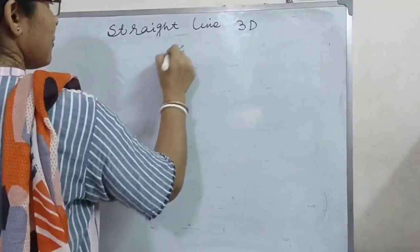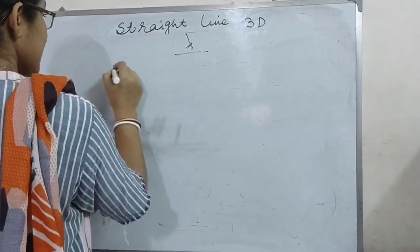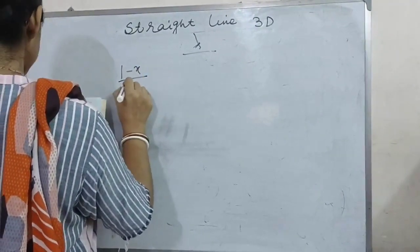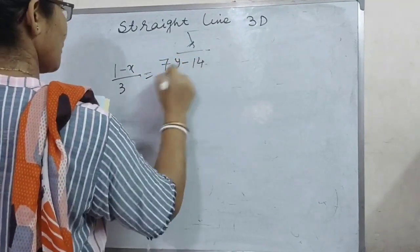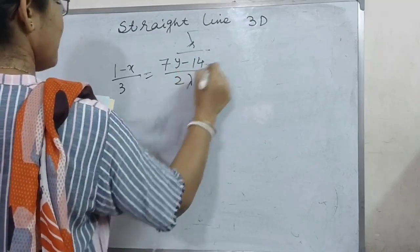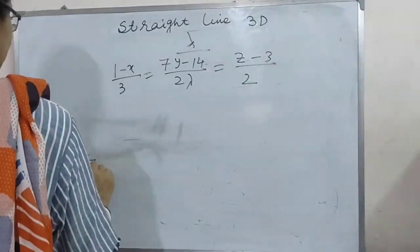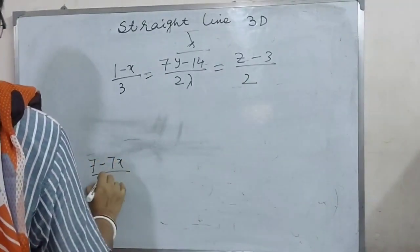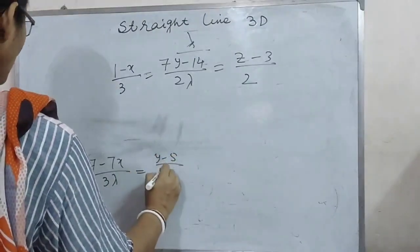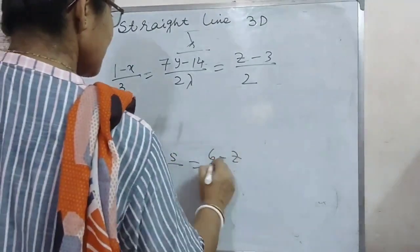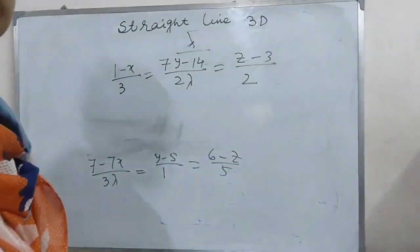Find the value of lambda so that the two straight lines — (1 minus x)/3 = (7y minus 14)/(2 lambda) = (z minus 3)/2 and (7 minus 7x)/(3 lambda) = (y minus 5)/1 = (6 minus z)/5 — are at right angles.